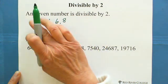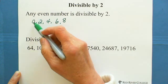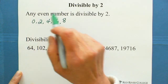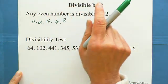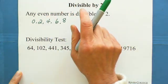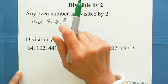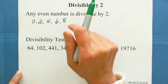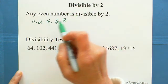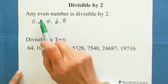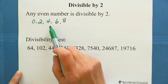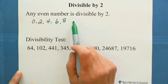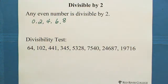Now, 0 is not itself an even number. But when 0 is on the last digit, it makes the number even — like 10, 20, 30. So all even numbers end with 0, 2, 4, 6, or 8, and that's why any even number is divisible by 2.